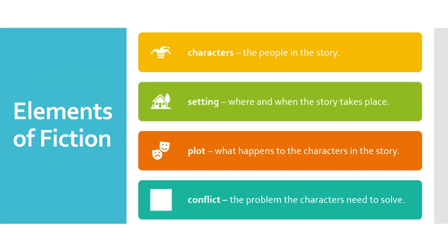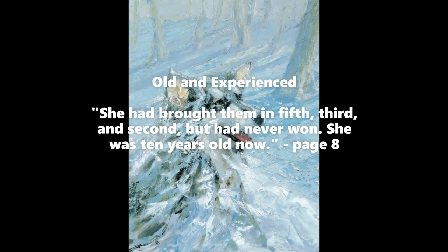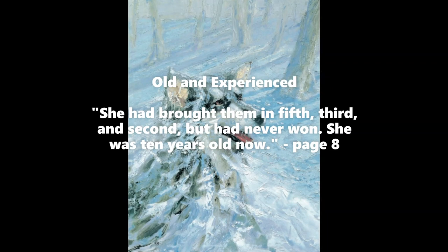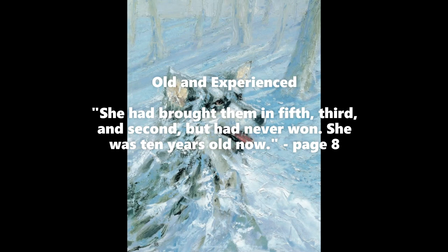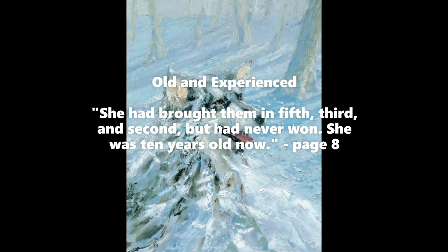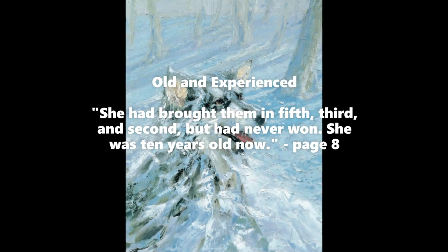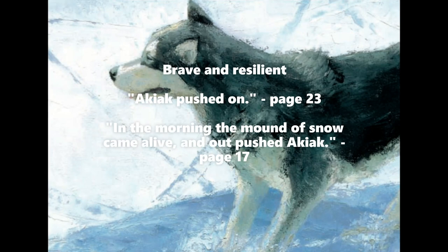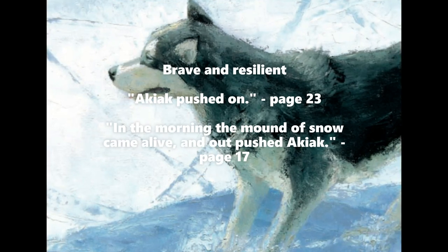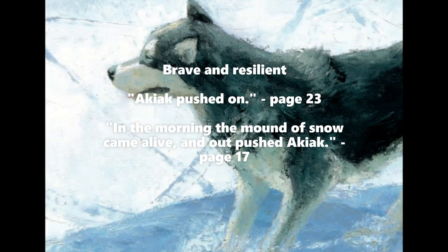Now we're going to talk about the different elements of fiction in the story Akiak. We talked about these earlier in the week in a previous lesson, but now we're going to go into more detail. We know characters are the people in the story, and we know the main character of our story is Akiak. But how could we describe her? You might have said that she's old and experienced, because of the different times in the text where it mentions how long she's been racing. We might also describe her as brave and resilient, because the text has numerous examples where she keeps on going no matter what obstacle she's facing.